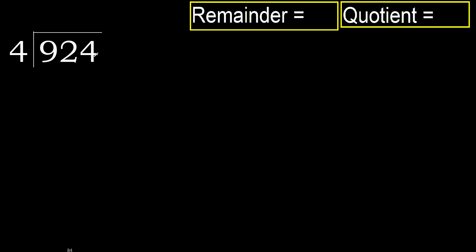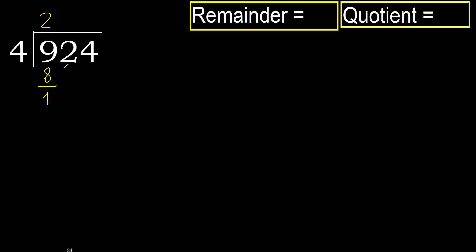924 divided by 4. Starting with 9: 9 is not less, so work with 9. Find what 4 multiplied by which number is nearest to 9 but not greater. 4 multiply by 3 is 12, which is greater. 4 multiply by 2 is 8, which is not greater. Subtract: 9 minus 8 is 1.